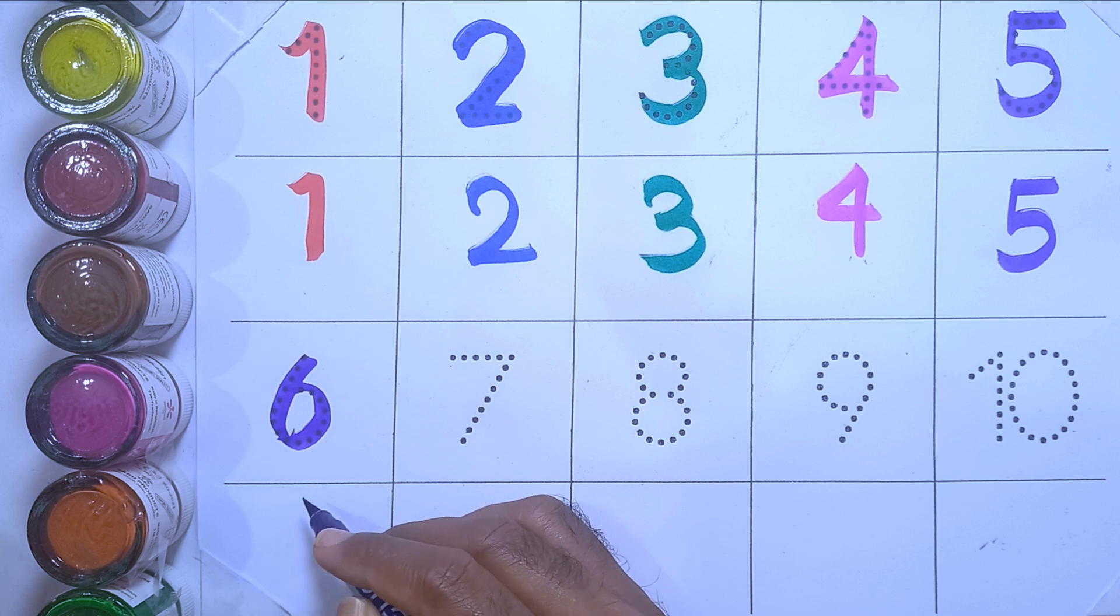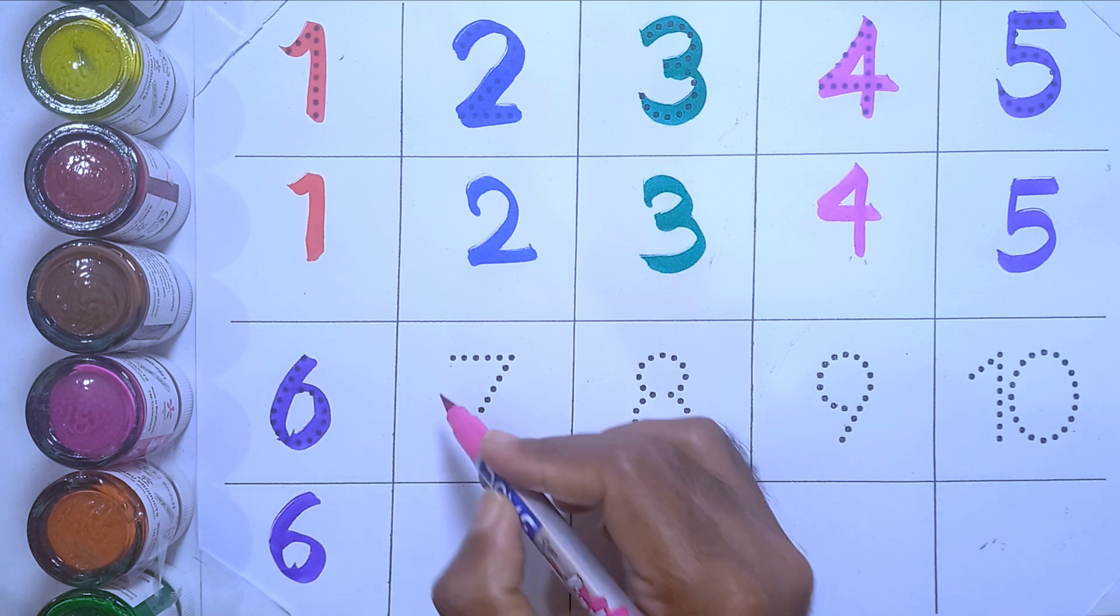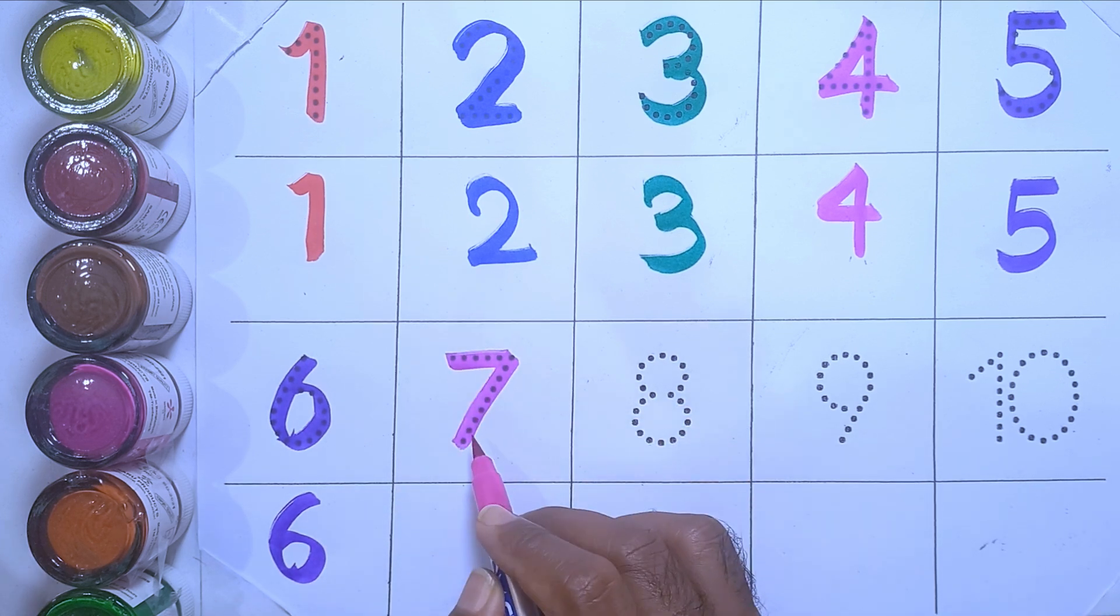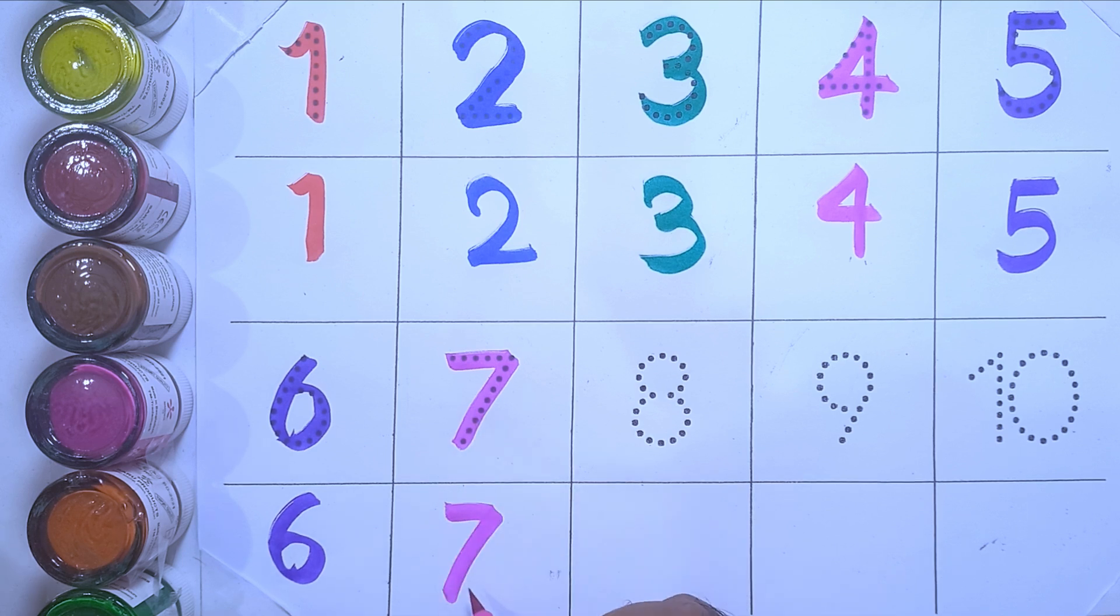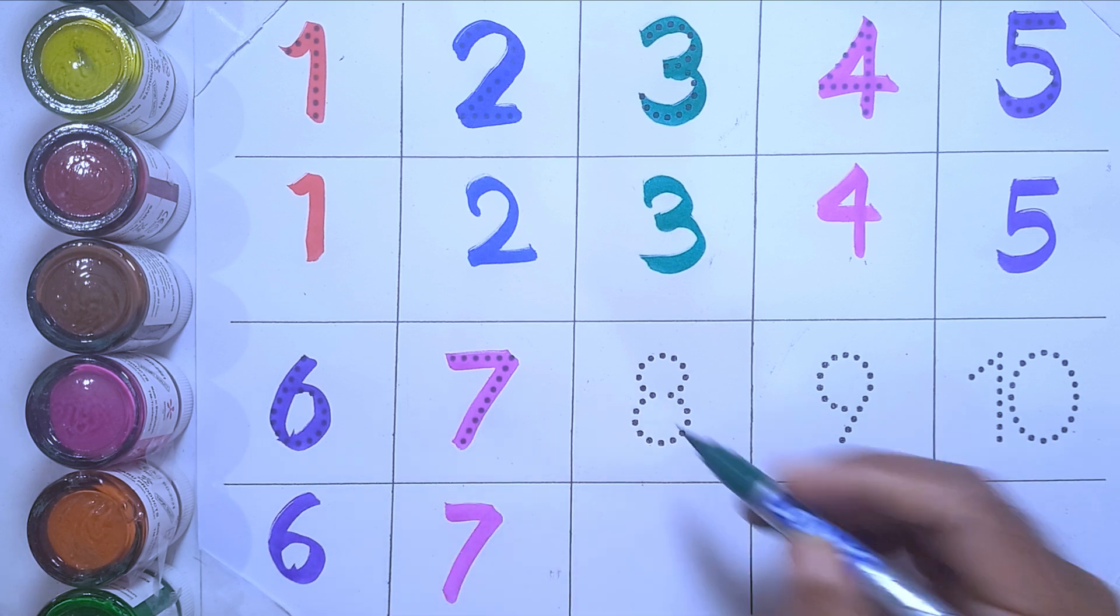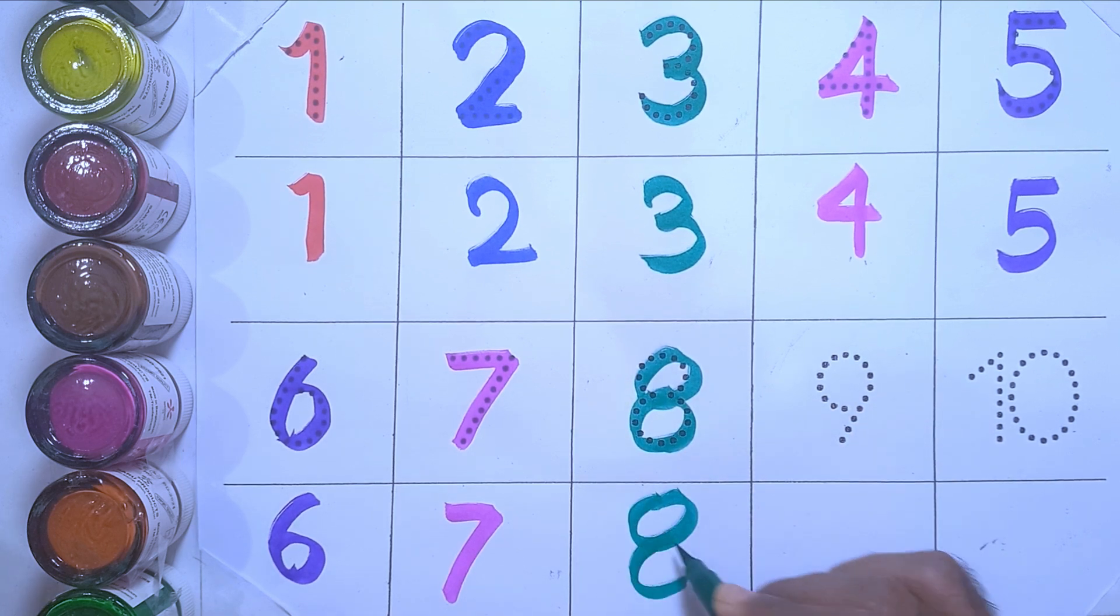Six: s-i-x, six. Seven: s-e-v-e-n, seven. Eight: e-i-g-h-t, eight.